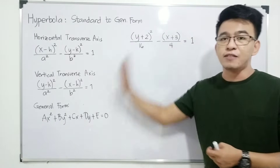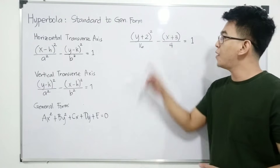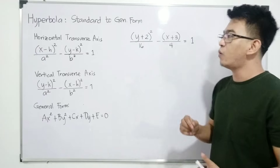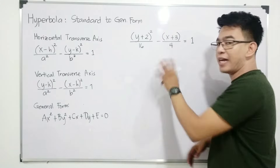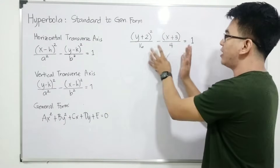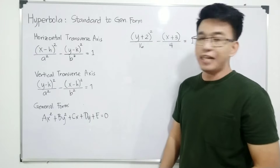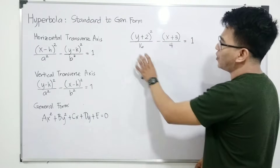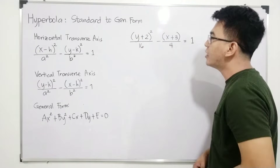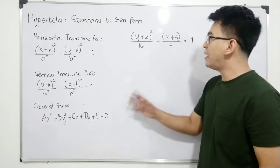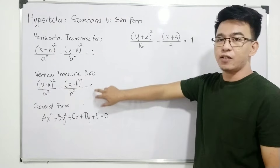We have Example Number 1, in which we are given: (y plus 2) squared over 16 minus (x plus 3) squared over 4 equals 1. Our target is to convert this standard form into the general form. By inspection, the variable y is the positive term, meaning the orientation of our hyperbola is vertical.